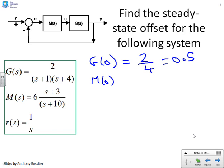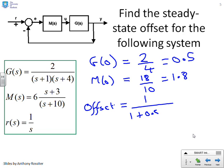M of 0 equals 18 over 10 or 1.8. I'm not sure which is going to be easier to use. We can put them both down. And therefore, the offset in the steady state is going to be given by 1 over 1 plus 0.5 times 1.8.